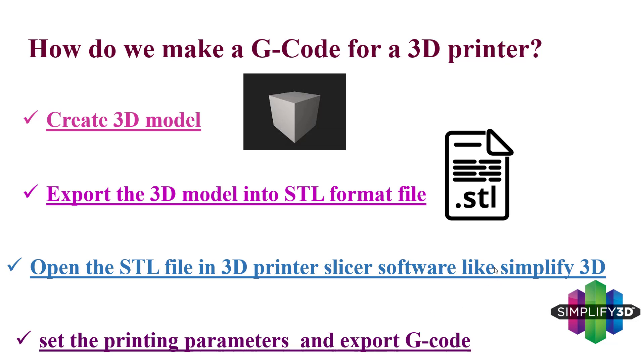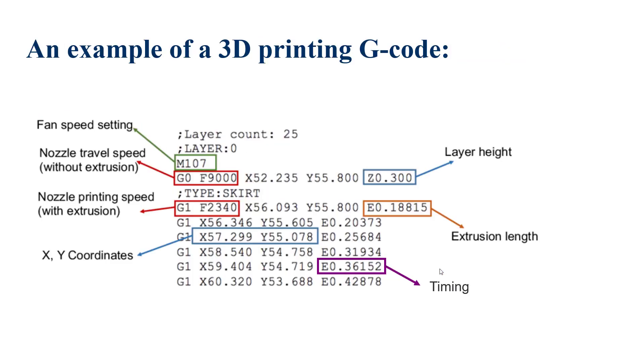After that, you should export the G-code from the STL formatted file by Simplify3D or other software. After you export the G-code, you can see a pattern like this slide. You can see some letters as well as numbers, and each has a specific meaning.